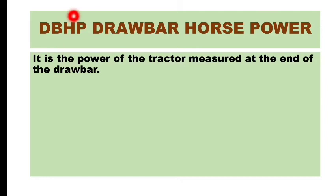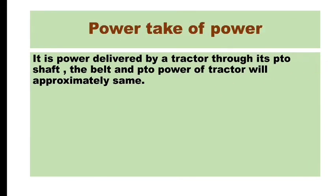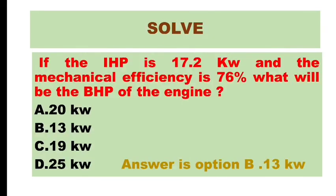DBHP stands for drawbar horsepower. The drawbar is an extension provided at the tractor to attach implements. Whatever power is expressed at the end of the drawbar is called drawbar horsepower. We have also seen PTO power or power take-off power. These were the simple power terms and engine terminologies.